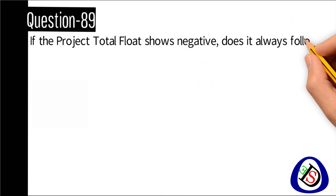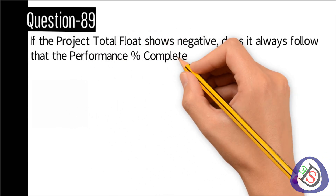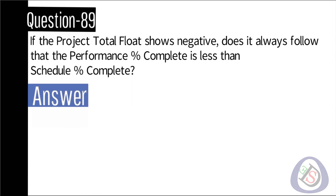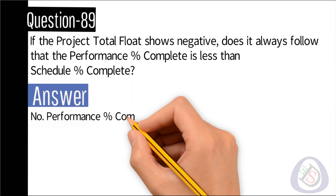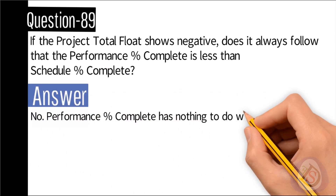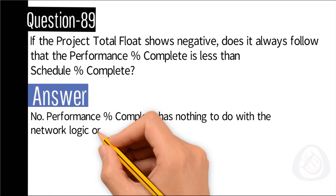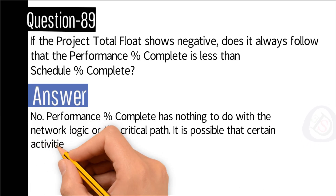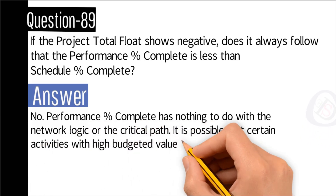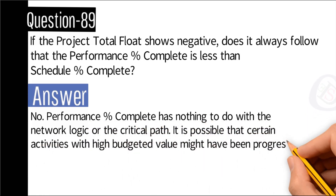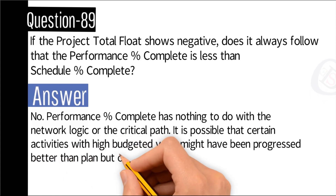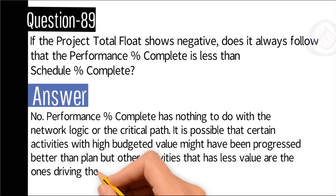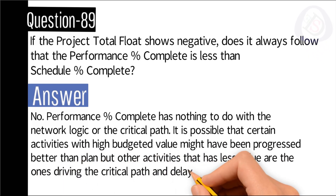Question number 89: If the project total float shows negative, does it always follow that the performance percent complete is less than schedule percent complete? Answer: No. Performance percent complete has nothing to do with the network logic or the critical path. It is possible that certain activities with high budgeted value might have been progressed better than planned.